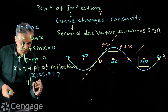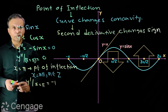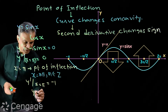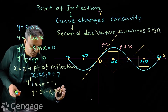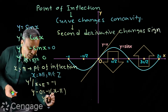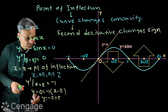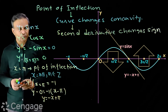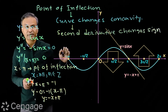At x = π, the derivative value y' = −1. So the equation of the tangent will be y − 0 = −1(x − π), giving the tangent line y = −x + π. This tangent line is also crossing the curve.